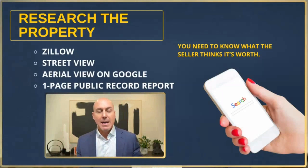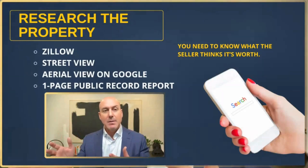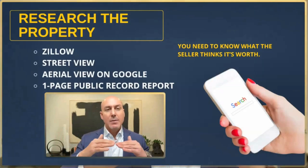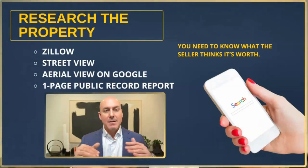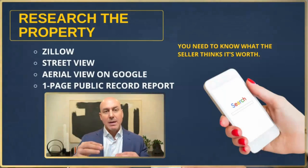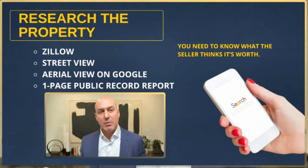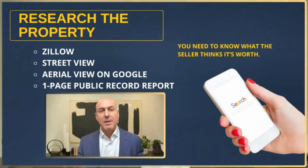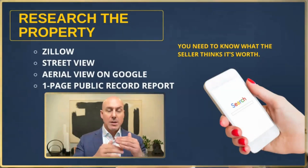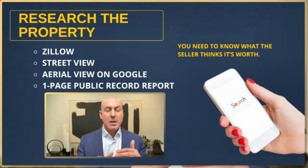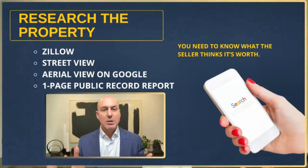If I know right now that there are three comparables actively competing against us, what do we have to be — the best overall in class in value pricing — to make sure all the buyers come to us and not the other three? If there are no actives, we go to the pendings, then to the solds, and the data will tell us exactly what we should do.